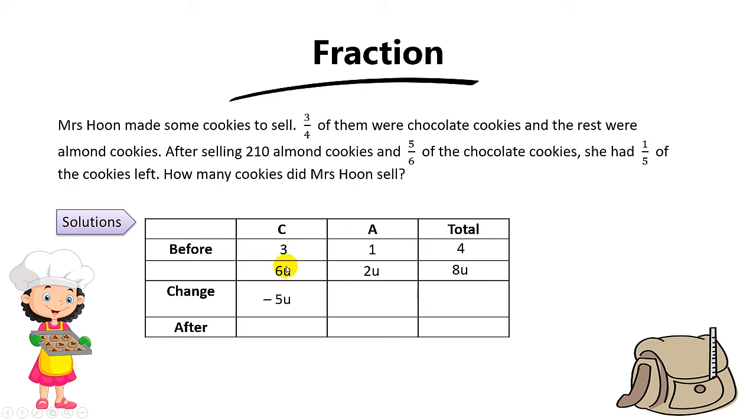Now let's apply the change. Out of the 6 units of chocolate, she's going to sell 5 units away. For the almond, she's going to sell 210 away. Now look at the total cookies. In the end, Mrs. Hoon had one-fifth of the cookies left. So to find the cookies left, you take 8 units times one-fifth. This one-fifth is of the total cookies.